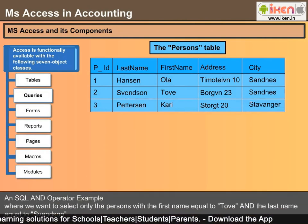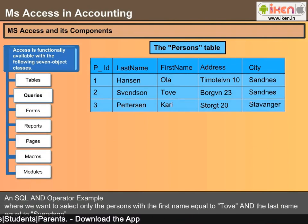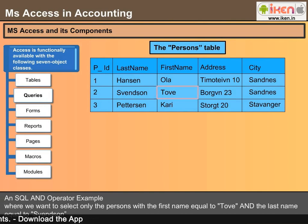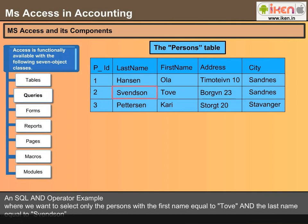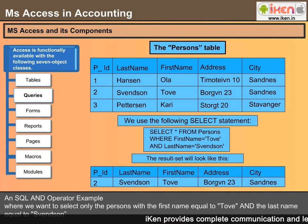Here is an SQL AND operator example, where we want to select only the persons with the first name equal to Tov and the last name equal to Svensson from the table below. We use the following SELECT statement and the result set will look like this.